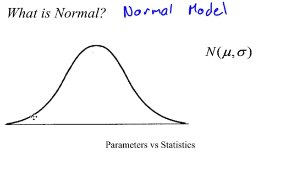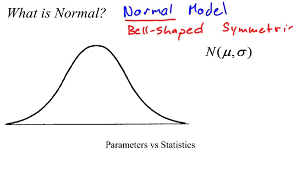A normal model is bell-shaped and symmetric. Whenever you hear the word normal you should know that we're talking about a bell-shaped curve and it is symmetric. Those two things go hand in hand. Bell-shaped and symmetric is a way that you can describe a normal model.